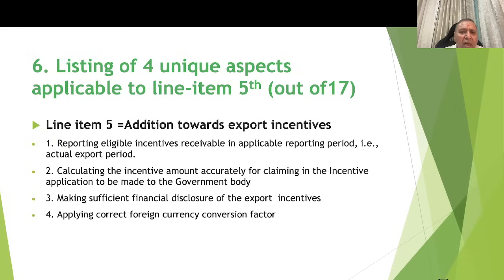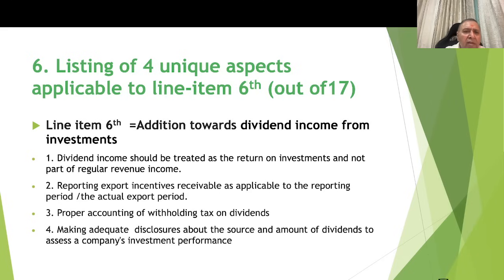For line item 5 — addition towards export incentives — there are government schemes that enable availability of export incentives on accomplishment of exports. Four aspects are relevant: reporting eligible incentives receivable in the applicable reporting period, which is the actual export period; calculating the incentive amount accurately for the claim application to the government body; making sufficient financial disclosures for export incentives; and applying the correct foreign currency conversion factor while determining the incentive amount to be received.